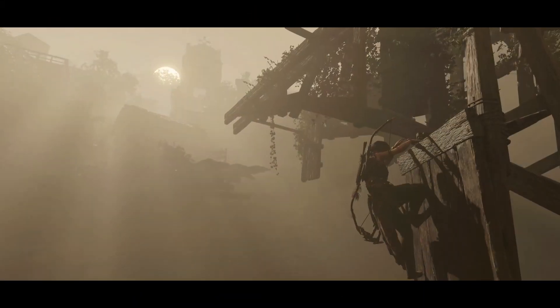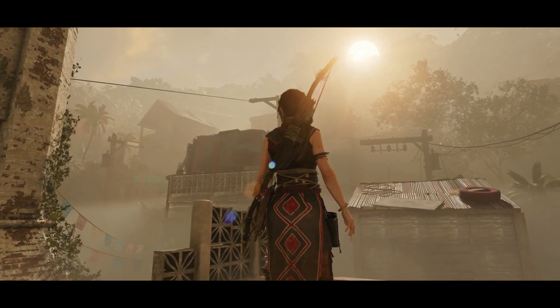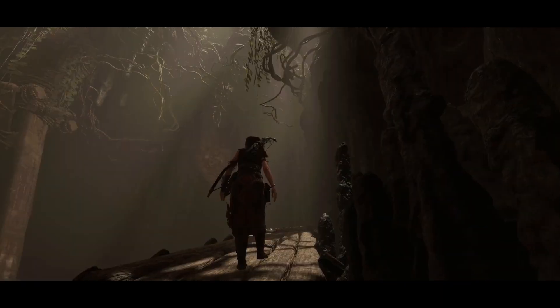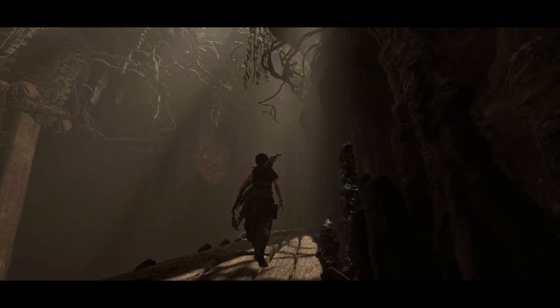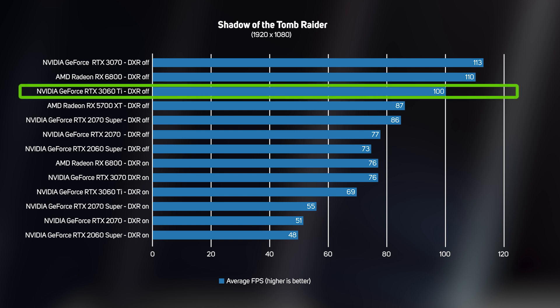The high-end RTX 30 series cards perform brilliantly in Shadow of the Tomb Raider, especially with DXR and DLSS enabled, so we were of course keen to see how the new RTX 3060 Ti runs this game. In traditional rasterized mode with a bucketload of anti-aliasing, the RTX 3060 Ti sped past its RTX 20 series predecessors with a silky smooth frame rate of 100 frames per second. Enabling gorgeous DXR graphics always comes with a performance hit though, but with a frame rate of 69 frames per second, Shadow of the Tomb Raider is still very playable on the RTX 3060 Ti.